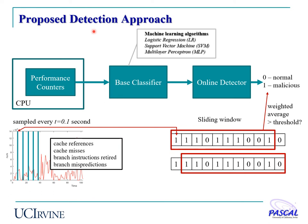Our proposed detection approach consists of three stages. In the first stage, we collect cache and branch-related features from the performance counter units every 0.1 seconds, and all the data is used to train the base classifier. The base classifiers are trained using different machine learning algorithms, including logistic regression, support vector machine, and multi-layer perceptron. During the online detection phase, the online detector takes in decisions from the base classifier, groups the data into a sliding window, and makes decisions according to the weighted average. If it is greater than the threshold, it outputs 1, denoting a malicious attack; if less, it outputs 0, denoting normal condition.